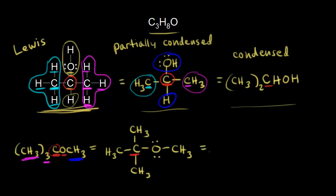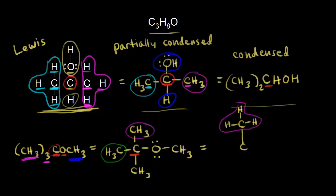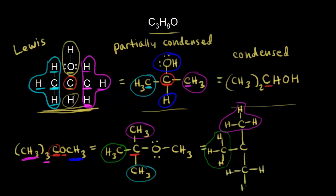To expand even more and draw the full Lewis structure, we again start with the carbon in red. That carbon is bonded to another carbon, which is bonded to three hydrogens — that's one CH3 group. Next we draw in a CH3 on the left: a carbon with three hydrogens. Then we draw in the third CH3 group in blue. We're drawing out all of the bonds in our full Lewis structure.